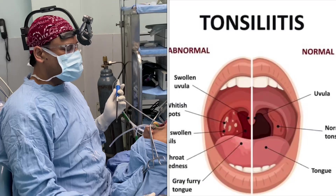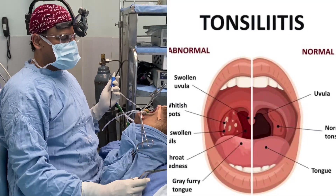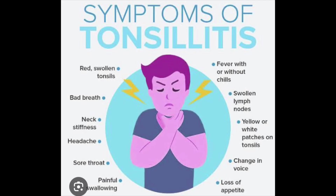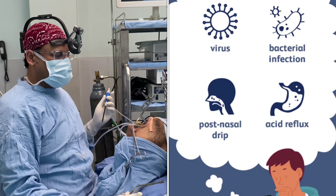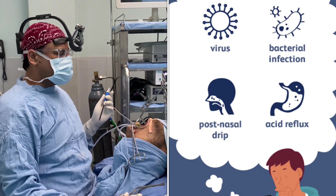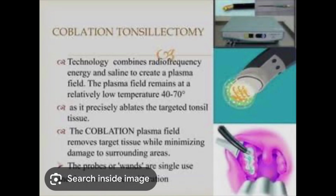Today we are planning to do a tonsillectomy for a young medical student. He has been suffering from recurring episodes of tonsillitis. Every time he gets tonsillitis, he gets very severe throat pain, difficulty in swallowing food. He is also having problems with acidity and reflux, and that is the reason for this kind of problem to happen. So we are doing an adult tonsillectomy.